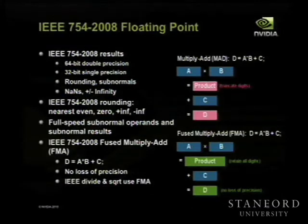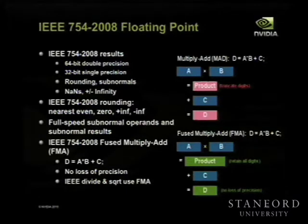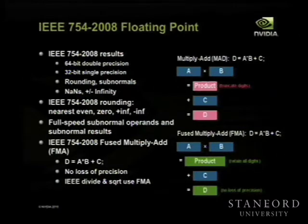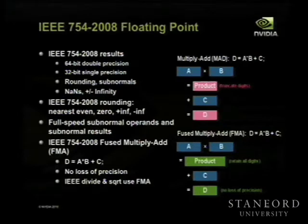A big change we added for programmability is full IEEE 754-2008 support — both 32 and 64-bit precision, including denormals. With floating point — sign, exponent, mantissa — if you underflow going toward very small numbers, you can get to the point where you can't make the exponent any smaller. Older machines would just flush the mantissa to zero. With denormals, or gradual underflow, we start shifting the mantissa to the right gradually, which eliminates precision loss as you get to very, very small numbers.